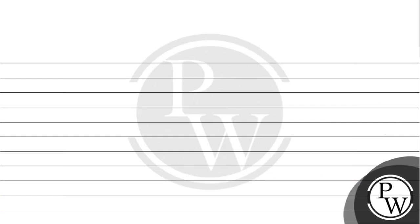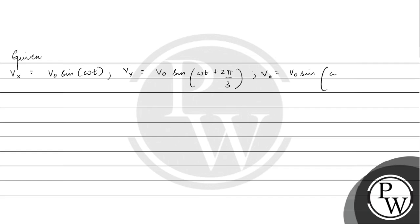Given: the voltage at terminal X is V₀ sin(ωt), the voltage at terminal Y is V₀ sin(ωt + 2π/3), and the voltage at terminal Z is V₀ sin(ωt + 4π/3). To find Vxy, we compute V₀ sin(ωt) − V₀ sin(ωt + 2π/3).